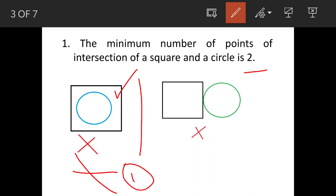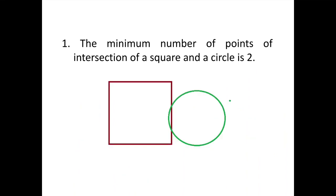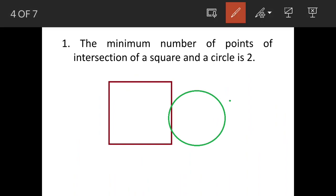In another wrong solution I have seen that circle is just touching a square and they are saying that the minimum point is 1. This is also not correct because again it is not an intersection. So minimum points are actually two - you draw the square like this and put the circle here. By virtue of its curvature it will have minimum two points.